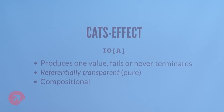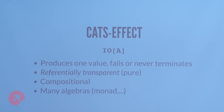IO is cool. You use IO by exploiting its many algebras. It's a monad — the IO monad — but also functor, applicative, and so on. You compose your program by composing all these IOs, and then at the very end of the world you run it with unsafeRunSync, and then all the stuff actually happens.